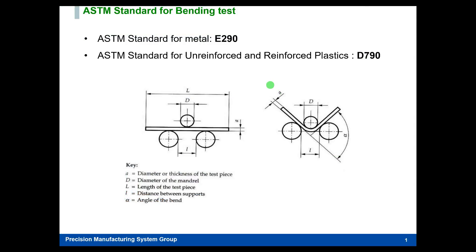Let's start the video. As you can see, we are going to talk about the ASTM standard for bending test. For metal, we can use E290, and for reinforced and un-reinforced plastic we should use the D790 standard. There are different standards for both metal and plastic, but these two are the main standards used in ASTM testing for the bending method.